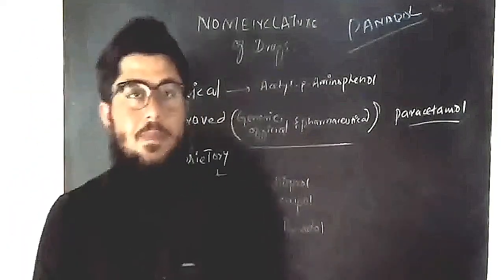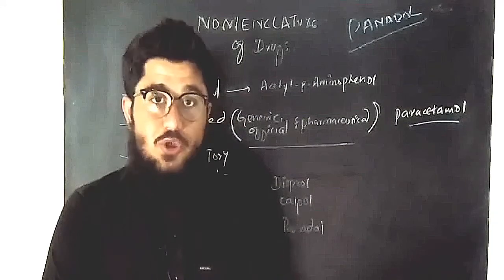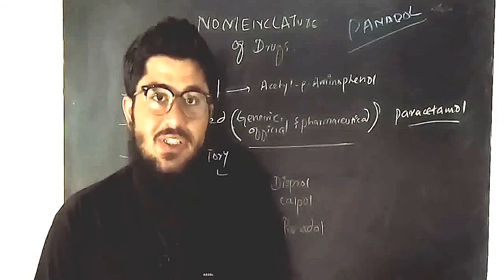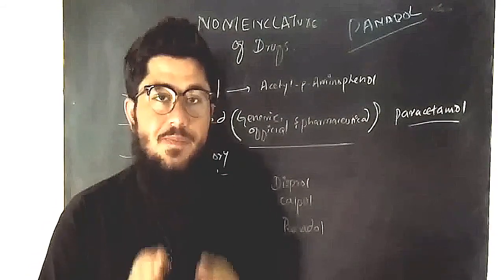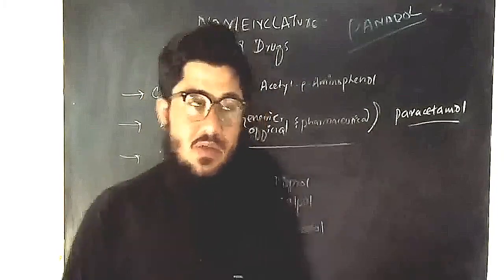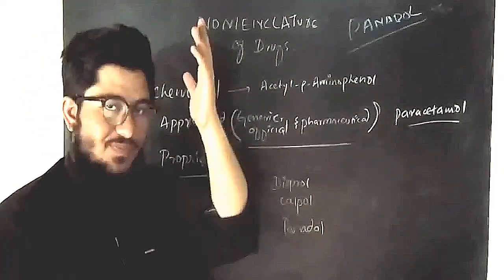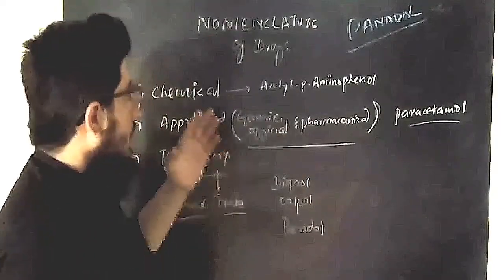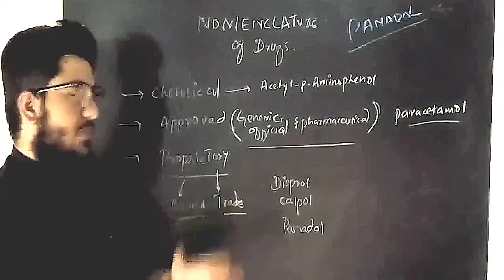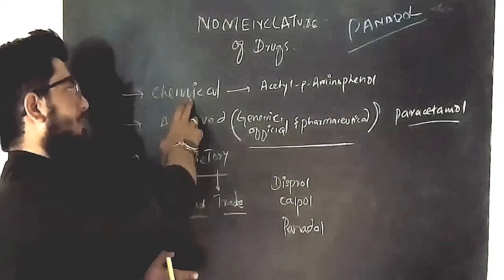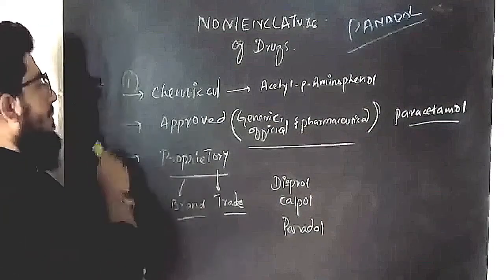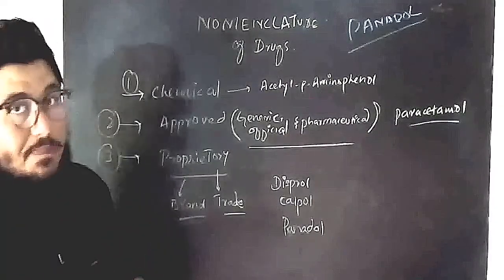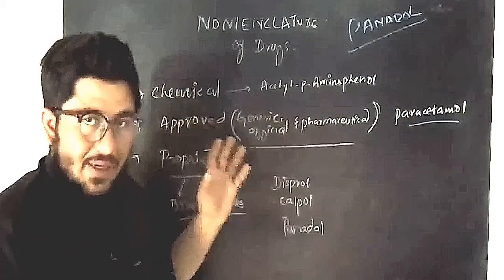Assalamualaikum to one and all on YouTube and Facebook. Let's continue the topic for the day, which is the nomenclature of drugs — how drugs are given names. From an oncological point of view, there are three names: number one, the chemical name; number two, the approved name; and number three, the proprietary name.